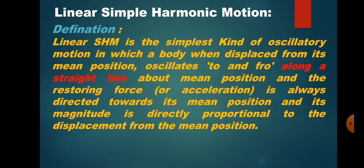The linear simple harmonic motion is the simplest kind of oscillatory motion in which a body, when displaced from its mean position and then released, oscillates to and fro along a straight line about the mean position. The restoring force is always directed toward the mean position, and its magnitude is directly proportional to the displacement from the mean position.